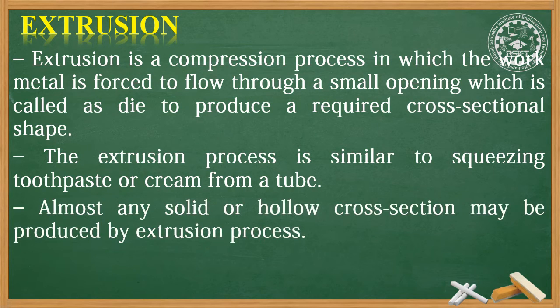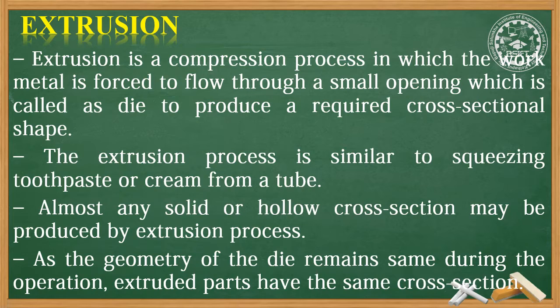Almost any solid or hollow cross-section may be produced by the extrusion process. As the geometry of the die remains the same during the operation, extruded parts have the same cross-section throughout their length.